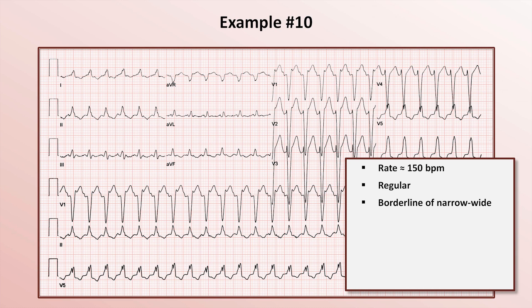So maybe this is just sinus tachycardia with a borderline wide QRS due to a left bundle branch block — we saw that a few examples ago. But let's zoom in on V1.